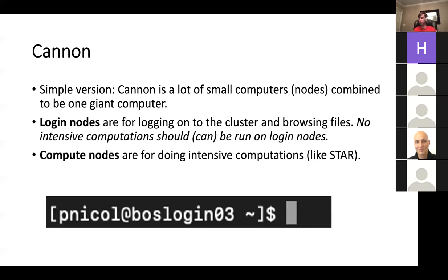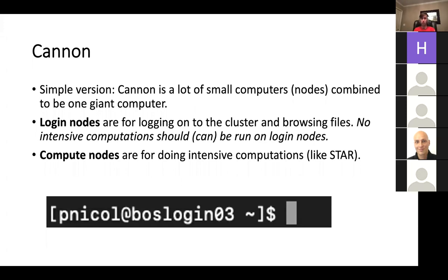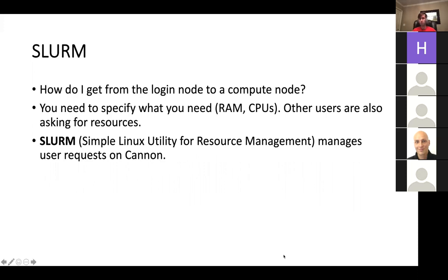In fact, it will probably stop you from doing intensive computation on login nodes. It's also about being a good citizen of the cluster — if you're doing heavy computations on the login node, it's going to make it slow because it's not designed for that, and it's going to make Canon slow for other users. So if you're going to do something like STAR, you need to go to a compute node. That's what SLURM is for: it gets you from the login node to the compute node so you can run things like STAR.